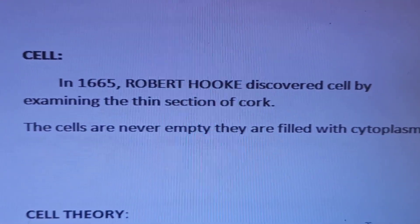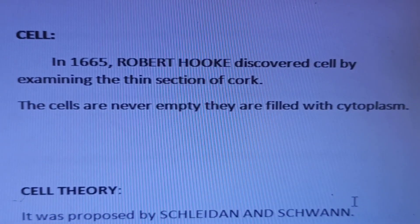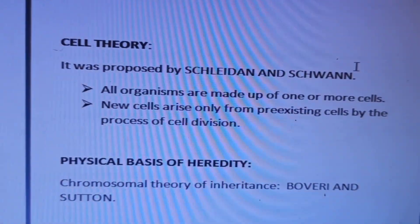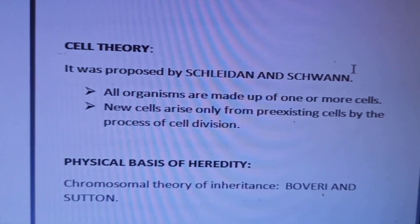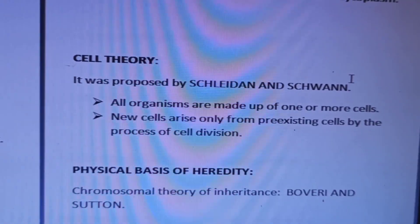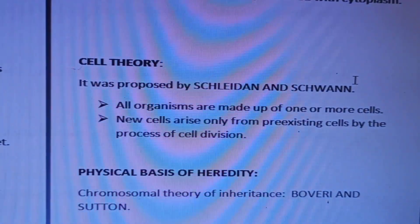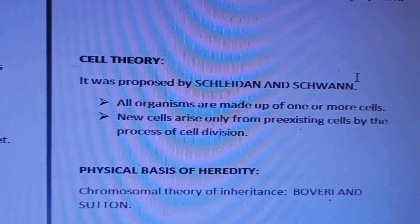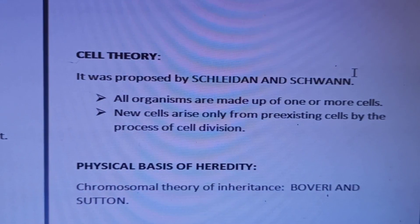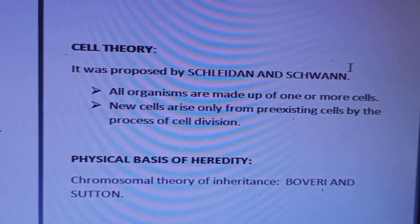Cell was discovered by Robert Hooke by examining a thin section of cork. The cells appeared filled with cytoplasm. These topics come under cytogenetics, which means cytology plus genetics — there are several branches in genetics. Cell theory was proposed by Schleiden and Schwann — Schleiden is a botanist and Schwann is a zoologist. All organisms are made up of one or more cells, and a new cell arises from pre-existing cells through cell division.